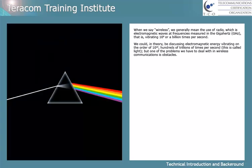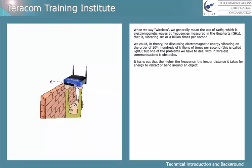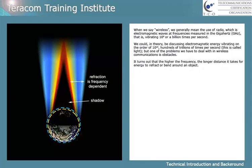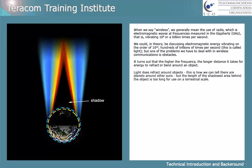But one of the problems we have to deal with in wireless communications is obstacles. It turns out that the higher the frequency, the longer the distance it takes for energy to refract or bend around an object. Now, light does refract around objects — this is how we can tell there are planets around other suns.